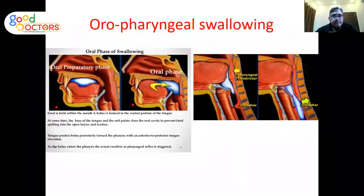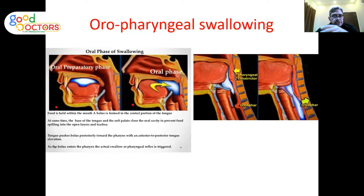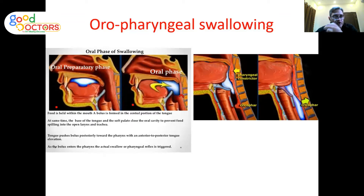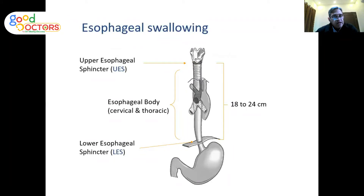This classification is based on two phases of swallowing: the oropharyngeal phase and the esophageal phase. The oropharyngeal phase carries food from the oral cavity into the upper part of the esophagus. This involves the muscles of the tongue, pharynx, and upper esophageal sphincter, which must work in a coordinated manner to carry the food bolus from the oral cavity into the upper esophagus.